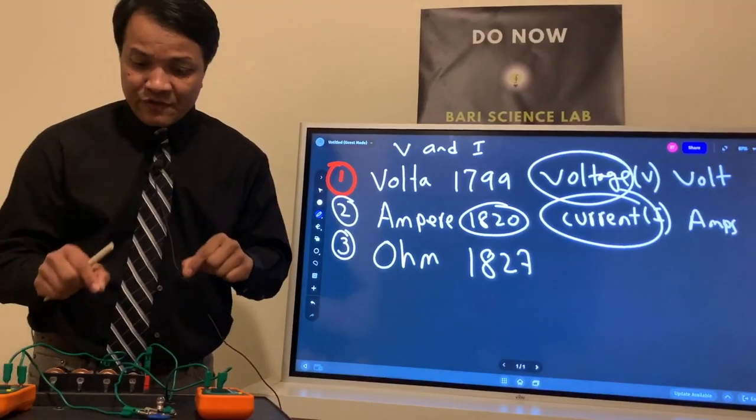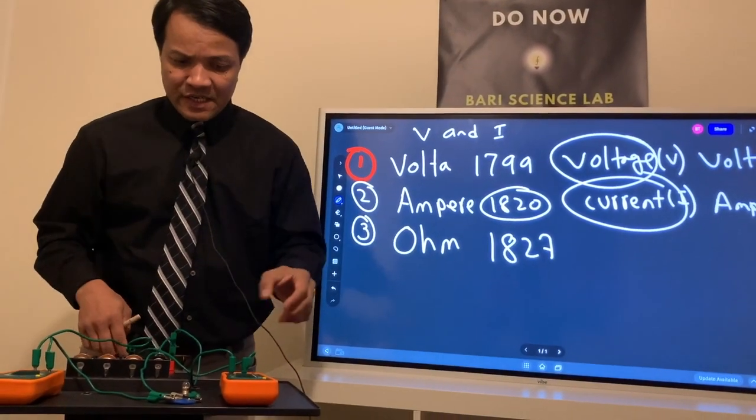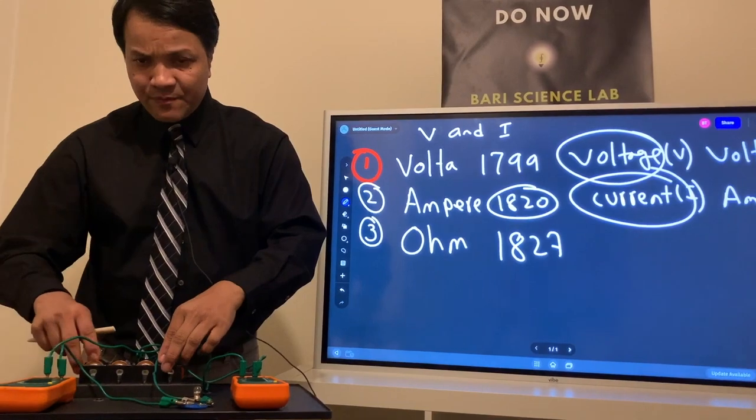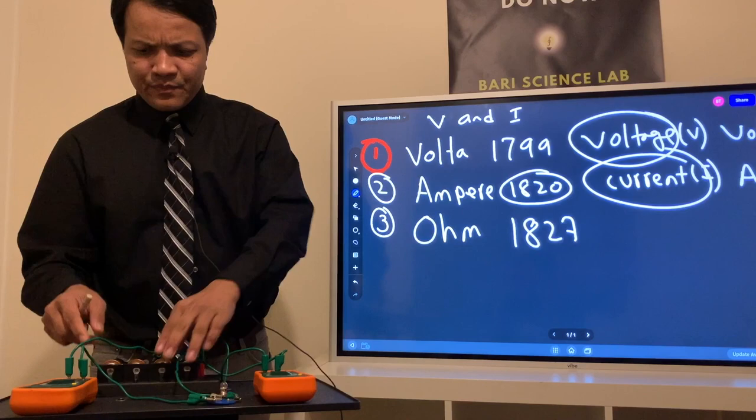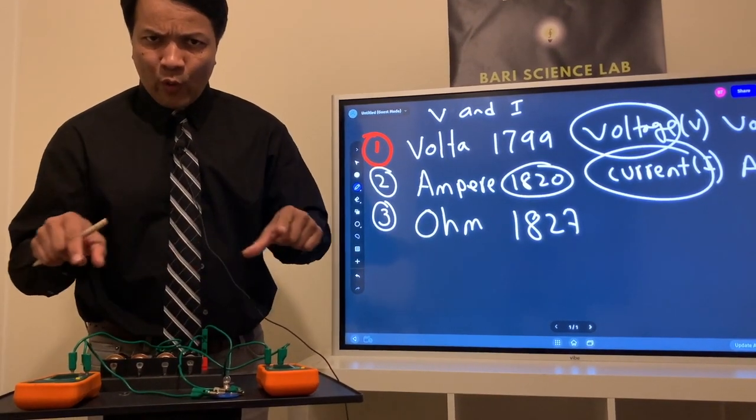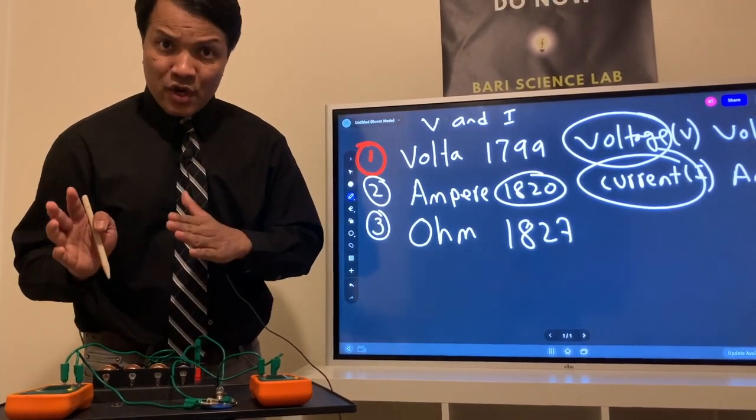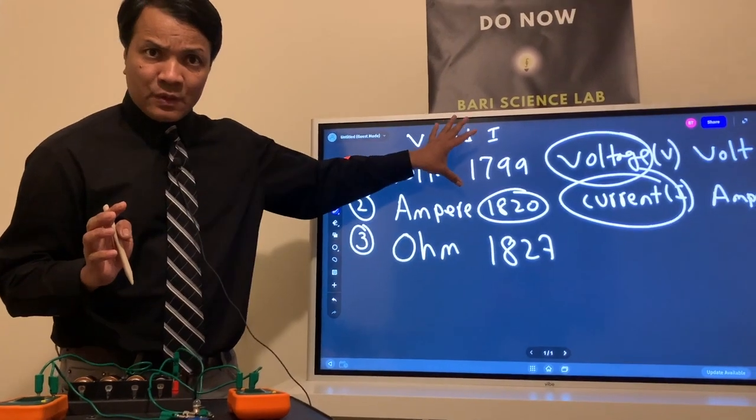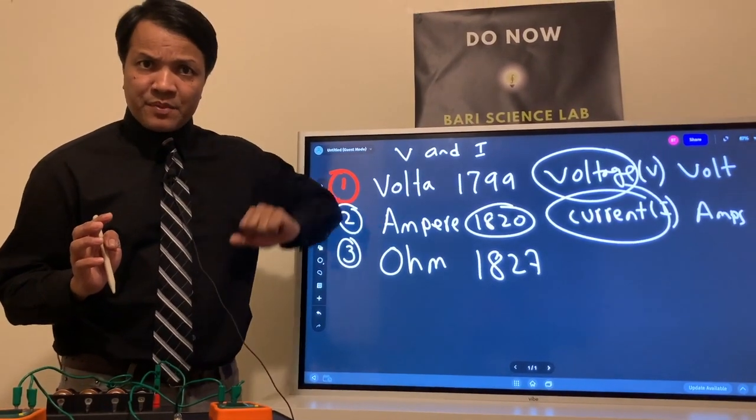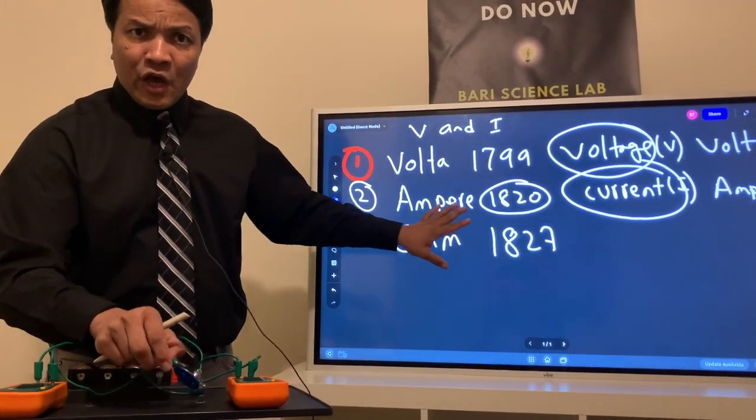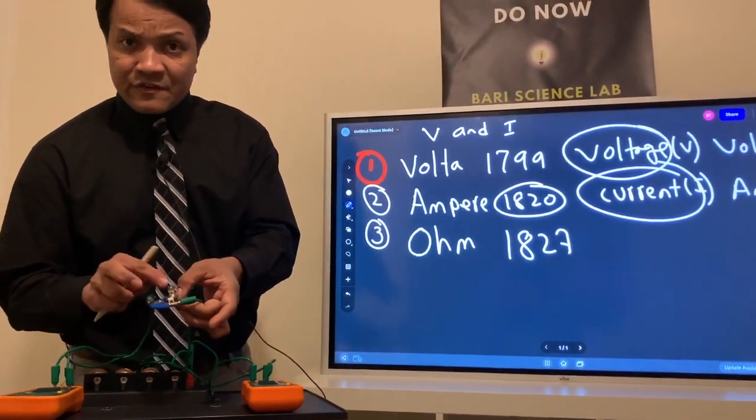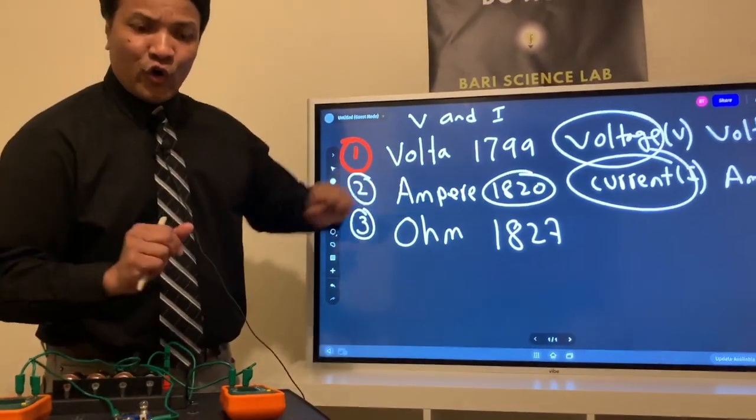Just like you see over here, this is an electric circuit. I have the battery invented by Alessandro Volta. I have the current flow in the wire from positive terminal to the negative terminal discovered by Ampere in 1820. And finally, I have the resistance inside the resistor sitting in the bulb discovered by Ohm.